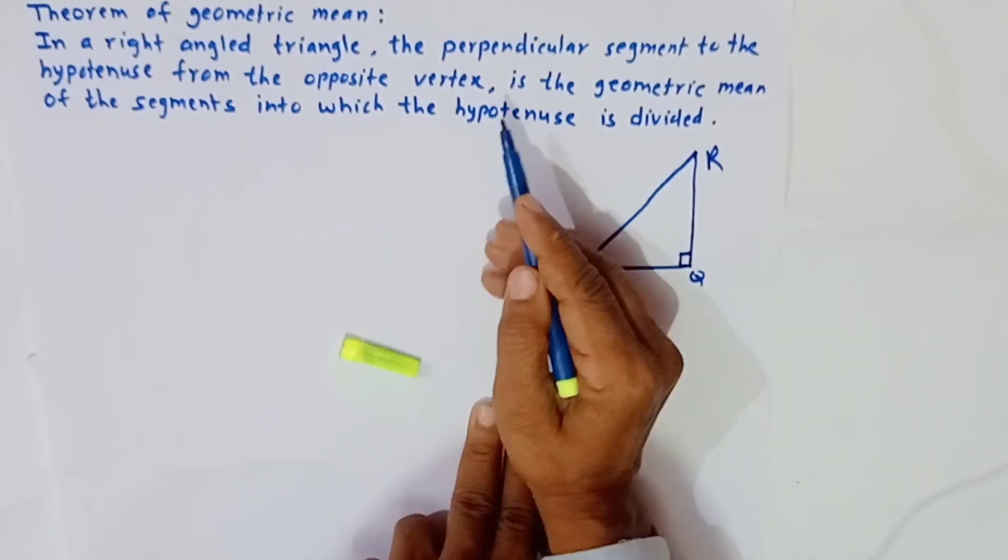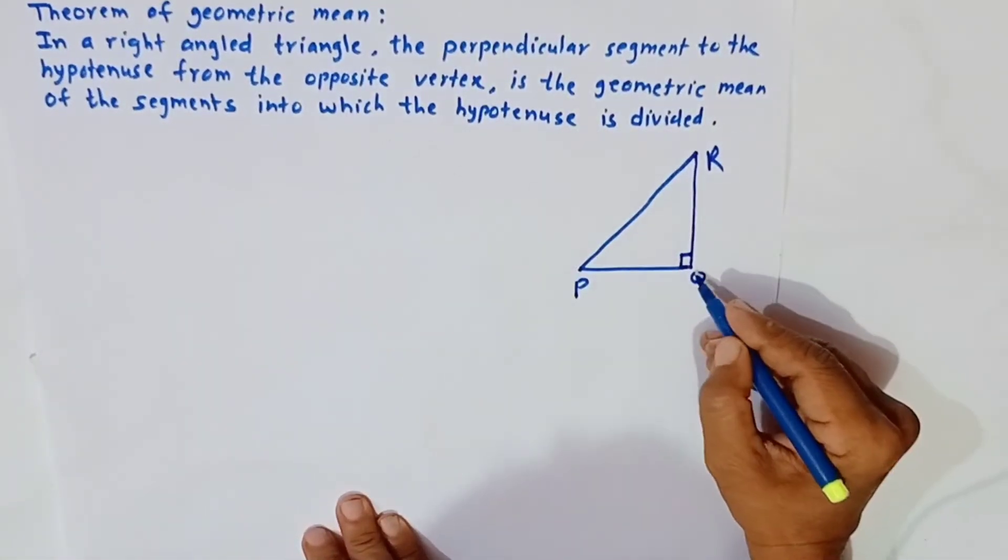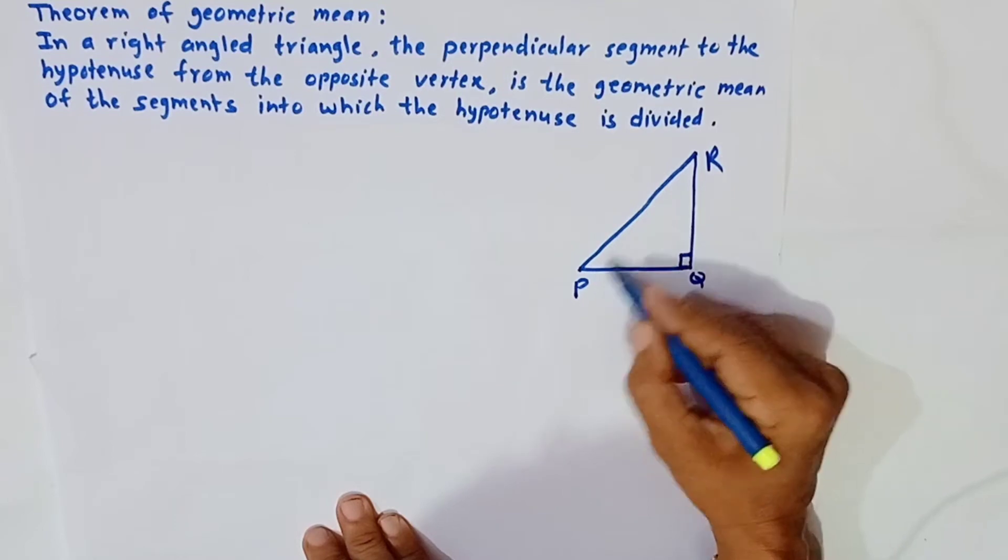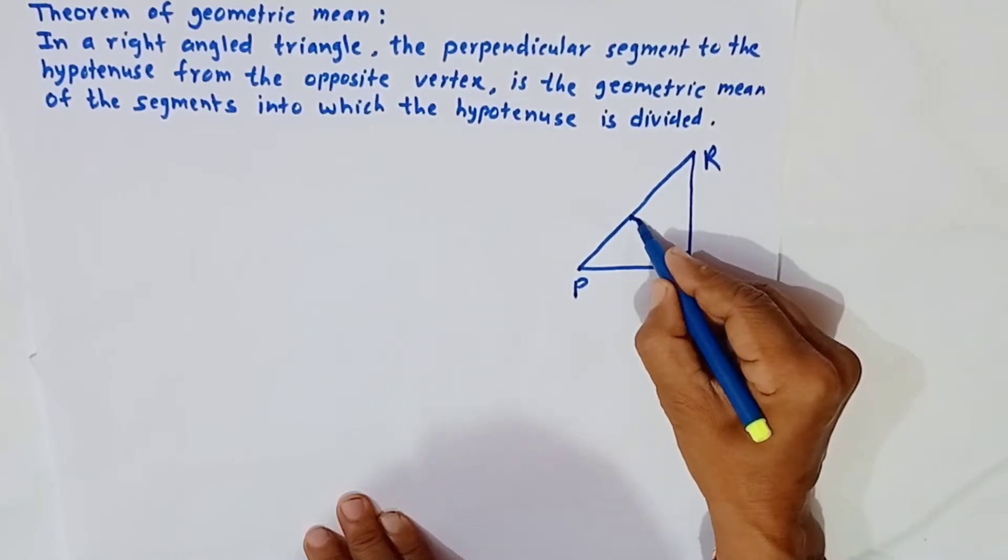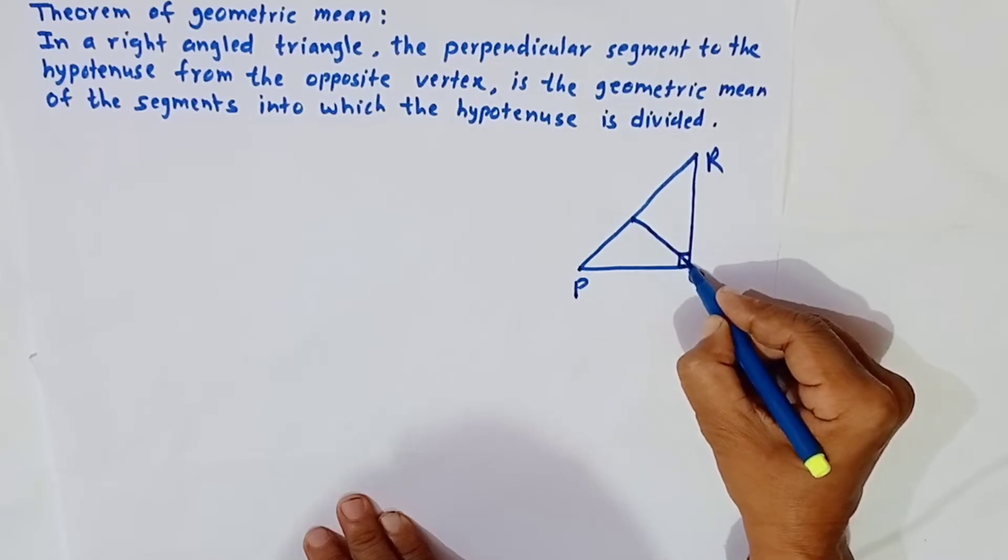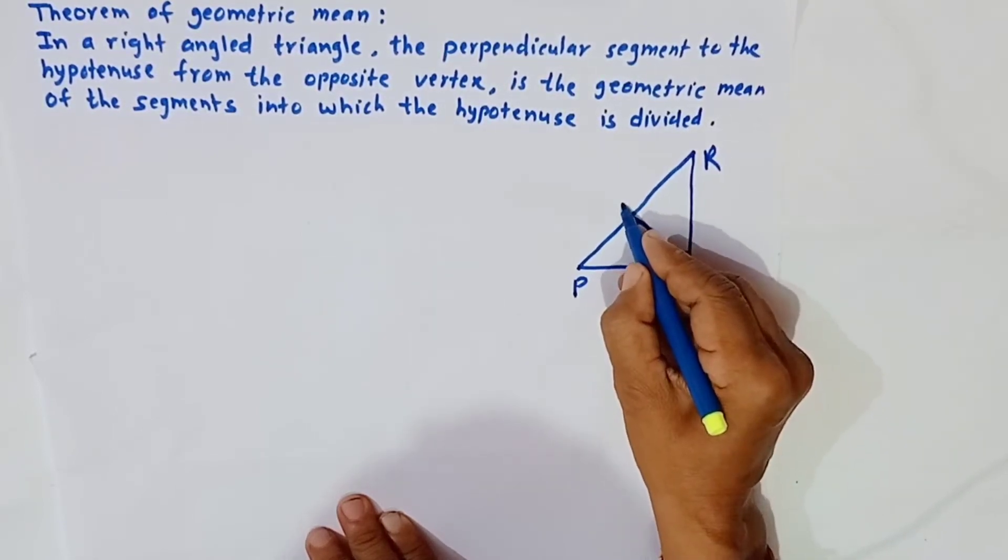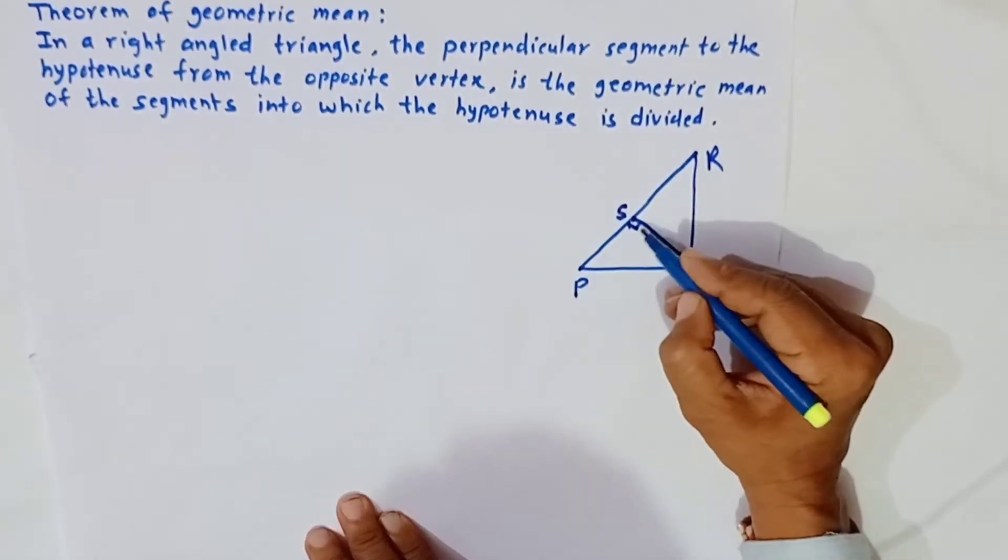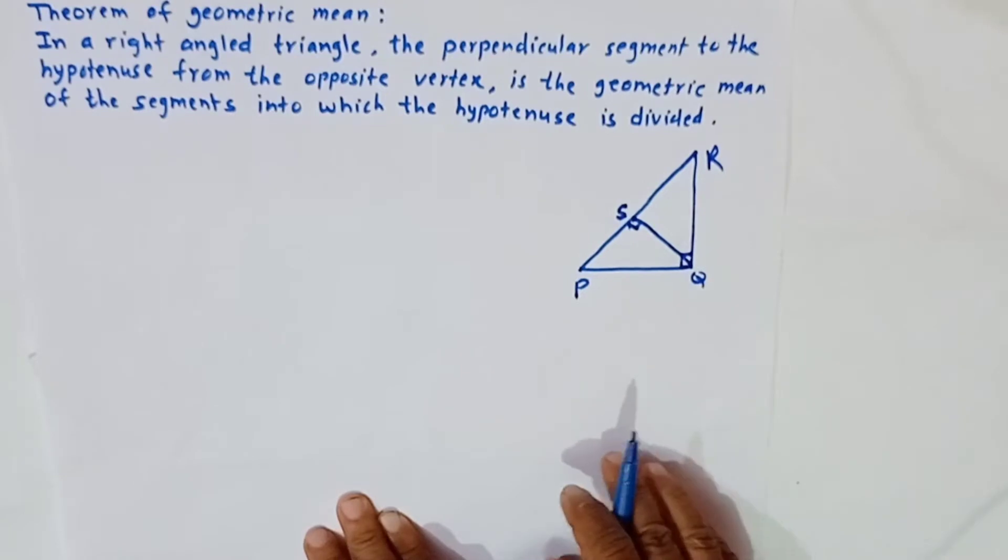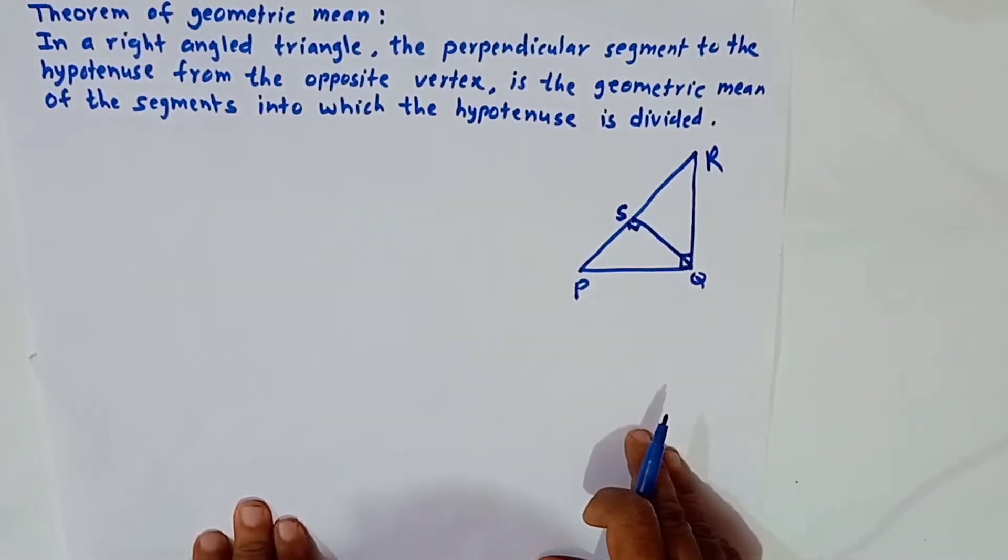The perpendicular segment to the hypotenuse from the opposite vertex - from this vertex to hypotenuse we draw a perpendicular segment and label it QS. This QS is the geometric mean of segment PS and SR. First we write given.